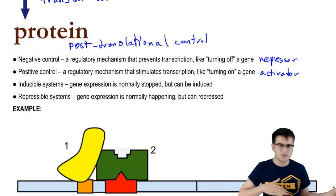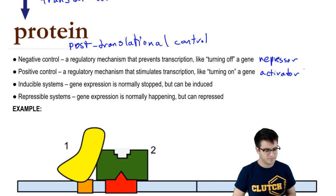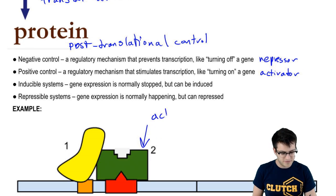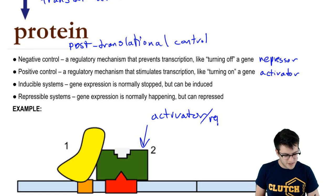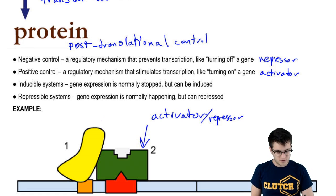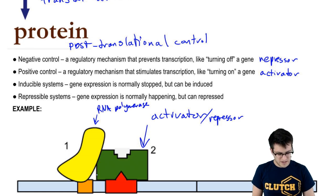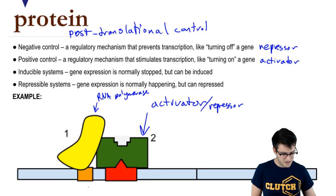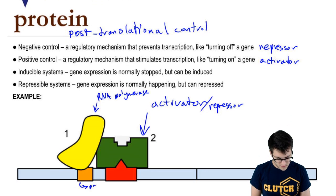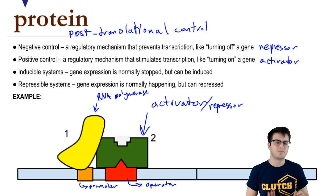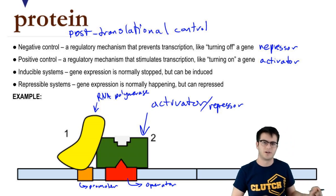So to summarize: positive control, negative control, inducible, repressible — you can mix and match these. Looking at this diagram, what's shown could be your activator or repressor, here is your polymerase, and here is your promoter. The region that the repressor or activator binds to is called the operator, which we'll talk about more on the next page. This is just a very generic diagram; we'll get into specifics when we turn the page.